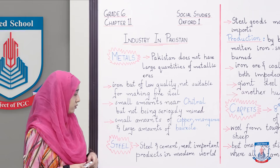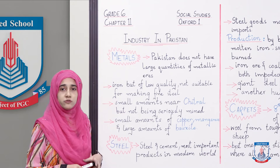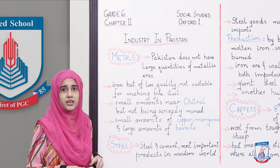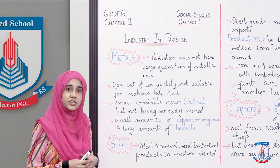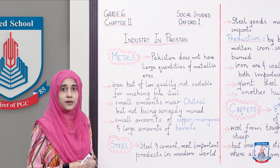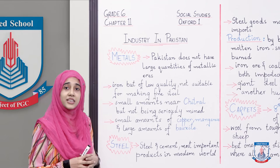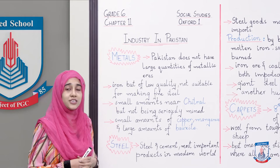Steel and cement are the most important products in the modern world. Modern world mein steel aur cement are extremely important — yeh taqreeban har jagah use ho rahe hain. Agar koi industry hai to usme jo machinery use ho rahi hai usme bhi steel use ho raha hai, aur agar construction ki ja rahi hai to usme cement use hota hai. Yeh dono major products hain jo kisi bhi country mein bahut zyada use kiye ja rahe hain.